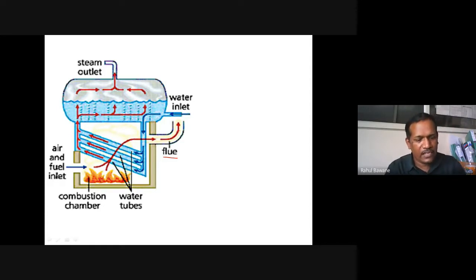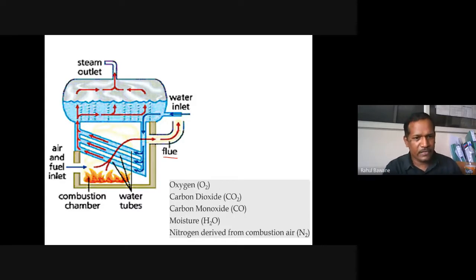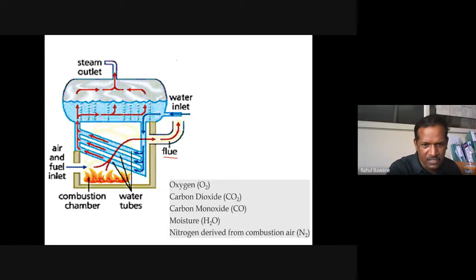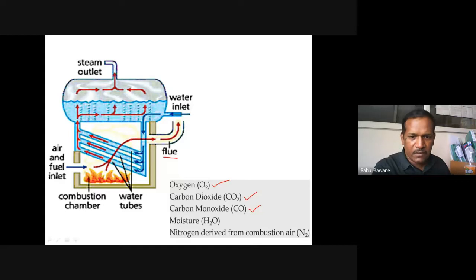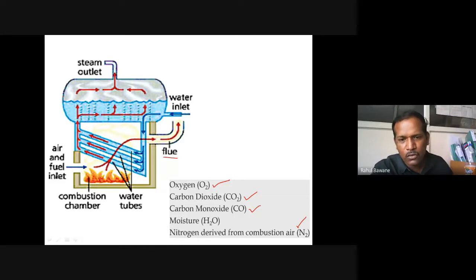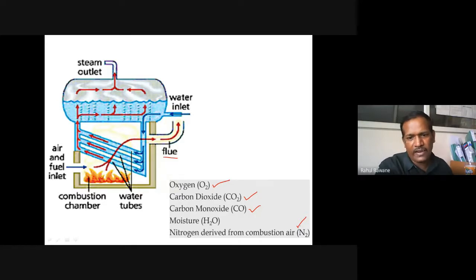We have to do the analysis of those flue gases. There are various instruments to analyze flue gases, but the simplest method is the Orsat apparatus. It is restricted to analyzing the content of oxygen, CO₂, and CO in your flue gas. By difference, we come to know how much N₂ is remaining. N₂ is not measured directly; it is the difference of total gas minus the sum of these three gases.